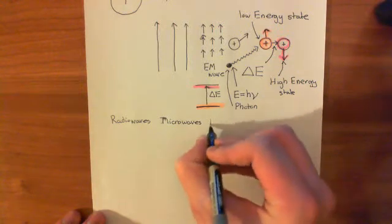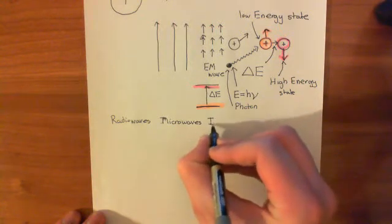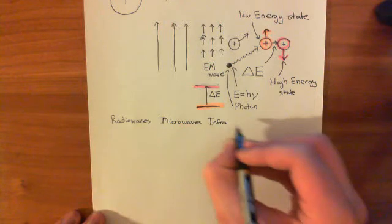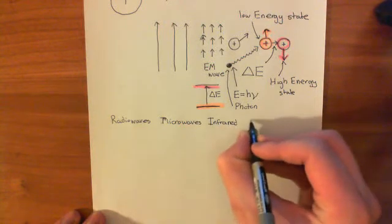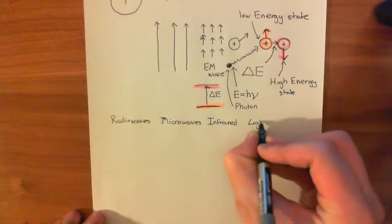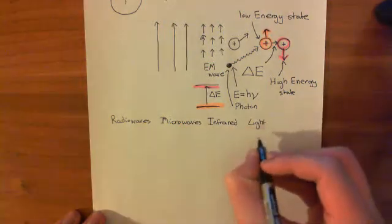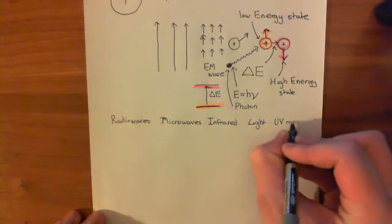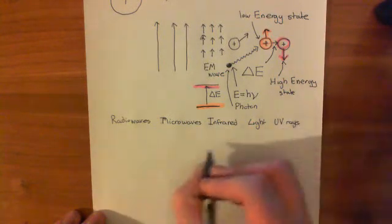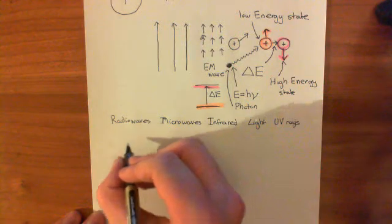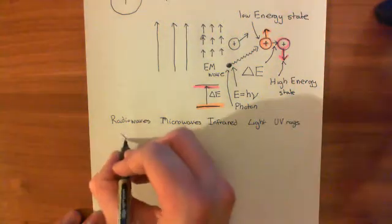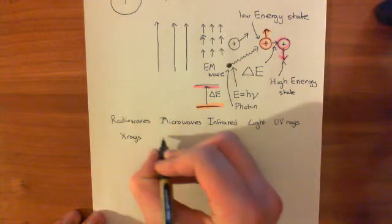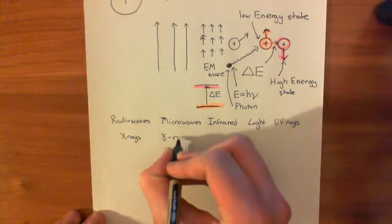Then you have infrared — frequency is getting higher — then visible light, then UV rays, then X-rays, and finally gamma rays.